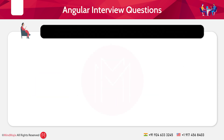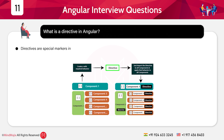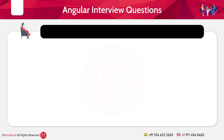The eleventh question: What is a directive in Angular? Directives are special markers in Angular that modify the behavior of elements, such as structural and attribute directives. Some examples are *ngIf and *ngFor.